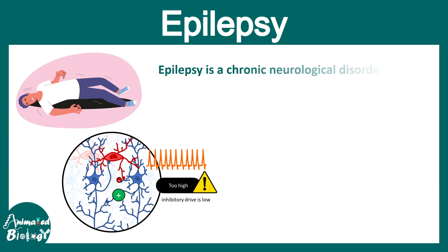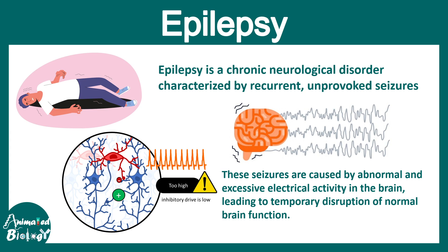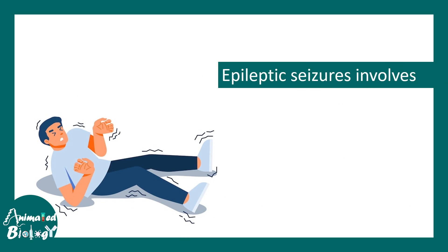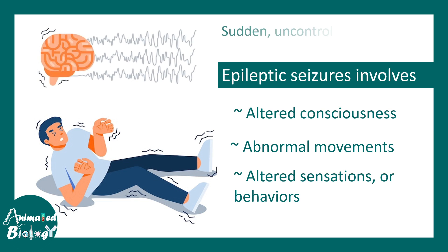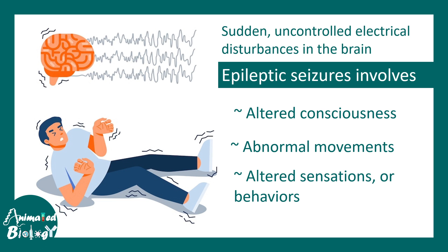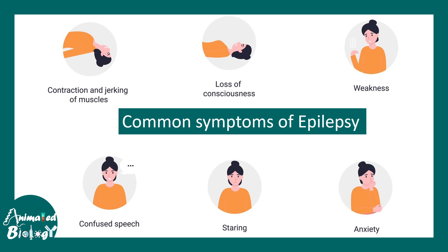Epilepsy is a chronic neurological disorder characterized by recurrent unprovoked seizures. Every seizure is not epilepsy, but epilepsy involves seizures in a recurrent fashion. These seizures are caused by abnormal and excessive electrical activity in the brain. Epileptic seizures involve altered consciousness, abnormal movement, altered sensation, and behaviors — these events occur suddenly as uncontrolled electrical disturbances in either the entire brain or a specific region. Common symptoms include muscle contraction and jerking, loss of consciousness, weakness, confused speech, and anxiety.